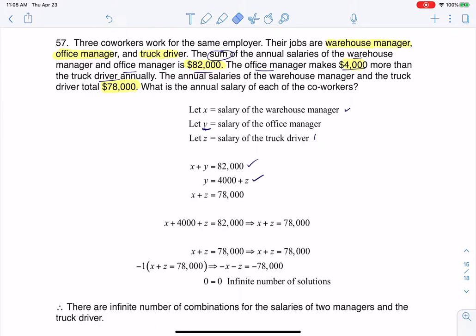All right, and then let me go ahead and erase some of this so it's not too junked up. The last thing that we see is that it says the annual salaries of the warehouse manager, that's going to be an x, and the truck driver, that's going to be a z, total $78,000. So that's where we come up with that third equation.